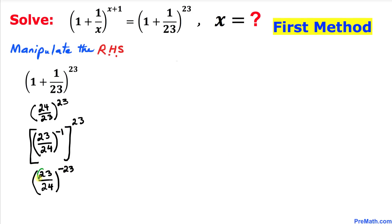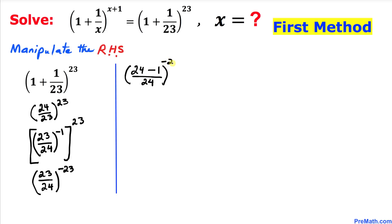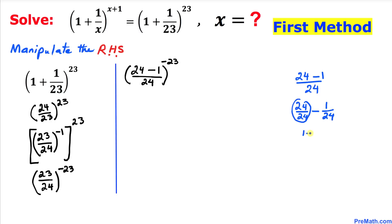Now we can rewrite 23 as 24 − 1, so we have (24 − 1)/24 raised to the power −23. Focusing on the fraction inside the parentheses, this can be written as 24/24 − 1/24, which gives us 1 − 1/24, and in turn 1 + (−1/24).